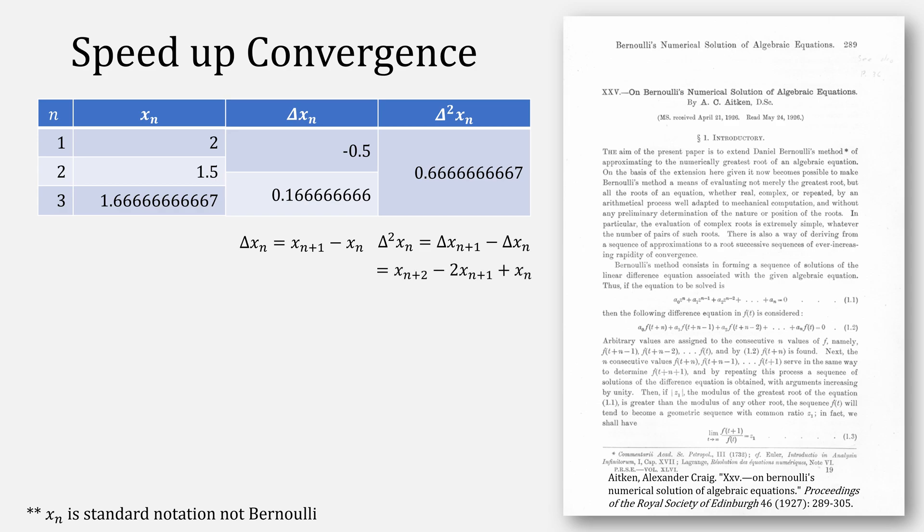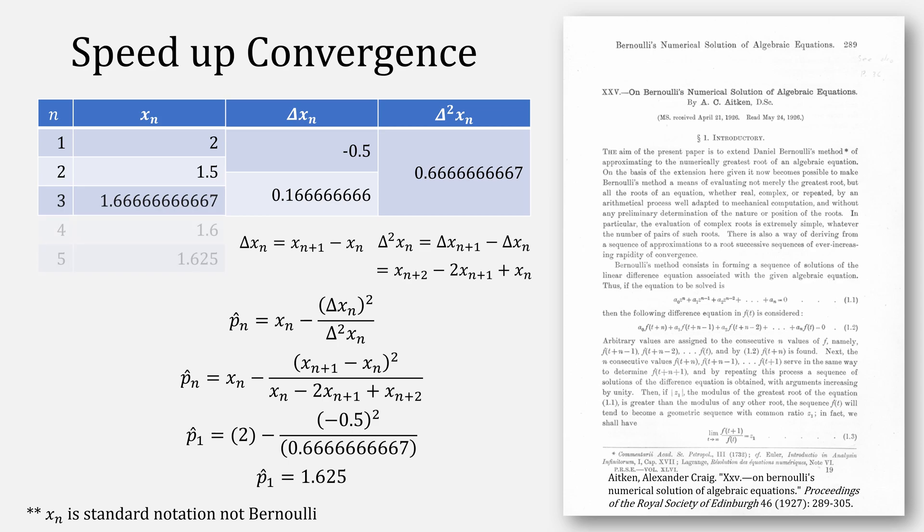Then apply Aitken's delta squared method, plugging in our numbers to give us the value of 1.625. If we had kept iterating on our series of x's, we would have eventually found 1.625. This is the power of the method. It accelerates the rate of convergence.